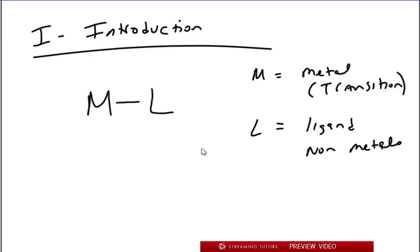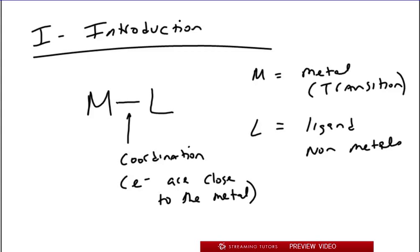Now, the way that we refer to them, even though I drew a bond between them, is actually that there's no real bonding here. This is called a coordination. So, metals and ligands, well, I should say ligands coordinate around metals. What that means is that their electrons come close. Electrons are close to the metal, but it's not a true bond. It's not a covalent bond. This is more ionic character to it.